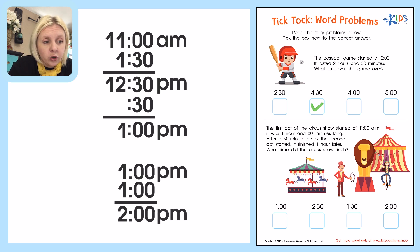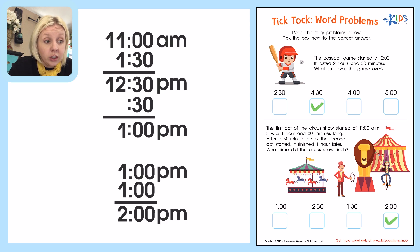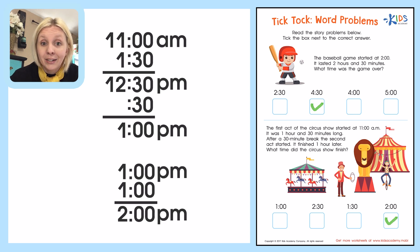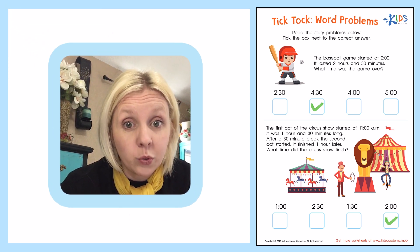That's our correct answer. So we come down here and find 2 o'clock. We've got 1 o'clock, 2:30, 1:30, and 2 o'clock — and that's actually 2 o'clock p.m. It didn't ask for a.m. or p.m., but it would be 2 o'clock p.m.